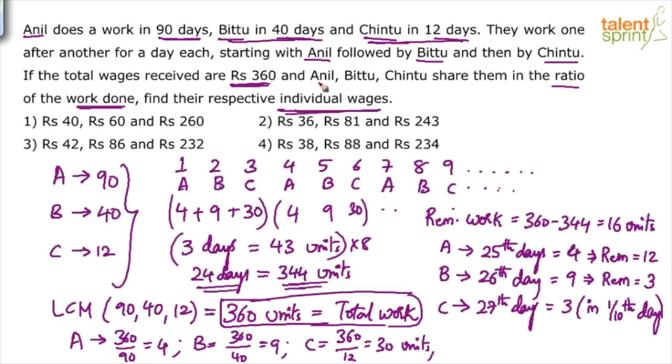He has mentioned that Anil, Bittu and Chintu will share them in the ratio of work done. Find out the ratio of work done. How much has A done? 4 units per day for how many days? 9 days. In 24 days, A has worked for 8 days. And on 25th day also A has worked. So total 9 days. 9 into 4. He has got 36 units.